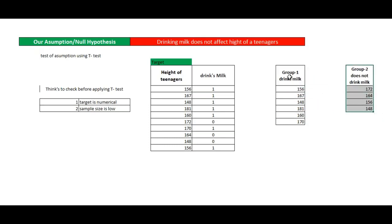This is now a statistics problem because we are checking about the mean. If there is a significant difference between the mean of the two groups, we can say that drinking milk is good for height or not drinking milk is bad for height. But if we fail to reject our null hypothesis, we can say that drinking milk does not have any relation with the height of a teenager. By this example we have understood the formulation of the problem, and now we will understand how to solve it.